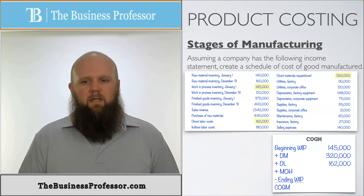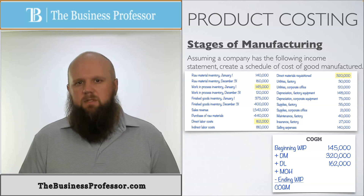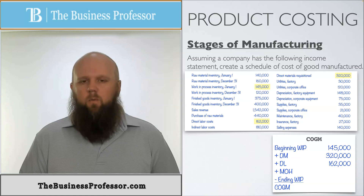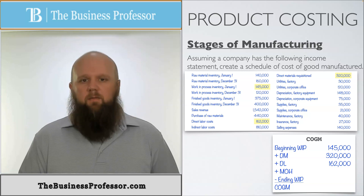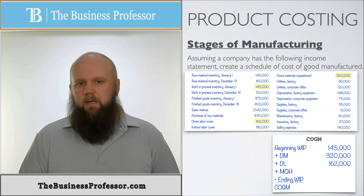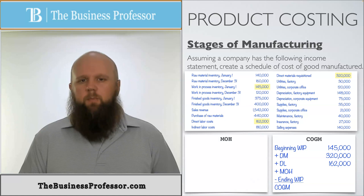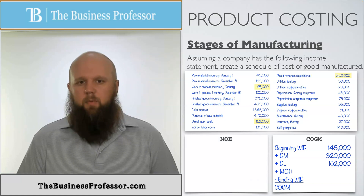Manufacturing overhead, on the other hand, is not given to us directly, but we have enough information to calculate it. We need to go through and find the manufacturing overhead pieces. Remember, manufacturing overhead consists of the costs that go into production of the product that are not direct material and not direct labor.